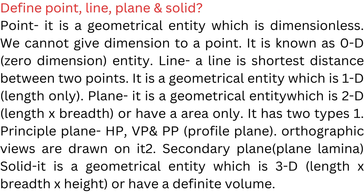Define point, line, plane, and solid. Point: a geometrical entity which is dimensionless; we cannot give dimensions to a point; it is known as a zero dimension entity. Line: the shortest distance between two points; it is a geometrical entity which is 1D, having length only. Plane: a geometrical entity with length and breadth, having area only.